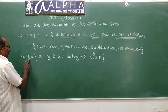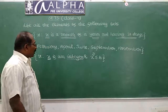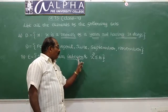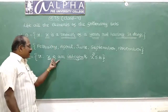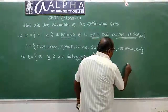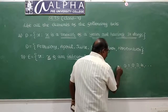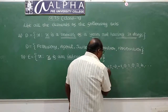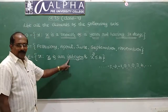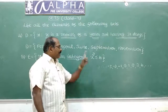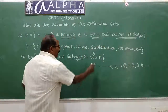Every element of the set is an integer, and one more property is given: the square of the integer must be less than or equal to 4. Integers are: 0, 1, 2, 3, 4 and so on, and to the left of 0: minus 1, minus 2, minus 3, and so on. The element 0 qualifies because 0 squared is 0, which is less than 4.